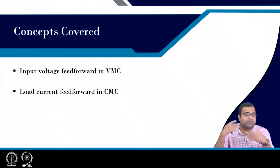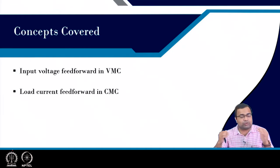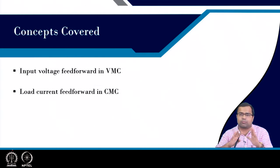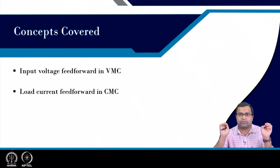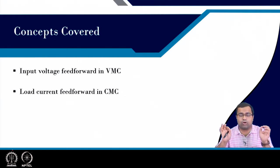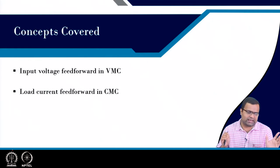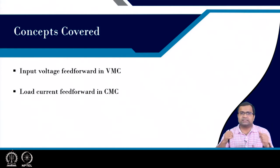In subsequent lectures, we will see that combined feed forward control can significantly change the loop gain characteristics. In voltage mode control, the loop gain is dependent on input voltage, but by incorporating input voltage feed forward, we can make the loop gain more or less insensitive to input voltage. Similarly, voltage mode control suffers from poor line regulation and current mode control suffers from poor load regulation, but by means of load current feed forward, we can make the loop gain insensitive to load current and achieve excellent transient performance and disturbance rejection.